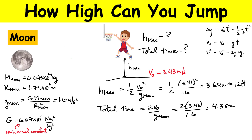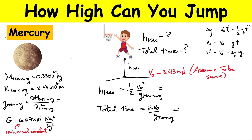Let's look at Mercury. It has a different mass and a different radius — values I found online. Substituting them in to calculate the acceleration due to gravity, I get 3.7 meters per second squared. Using our maximum height equation, substituting in the values, we get a maximum height of approximately 1.6 meters — about a meter higher than on Earth. Our total flight time, again assuming the same initial velocity, gives a total flight time of 1.85 seconds.